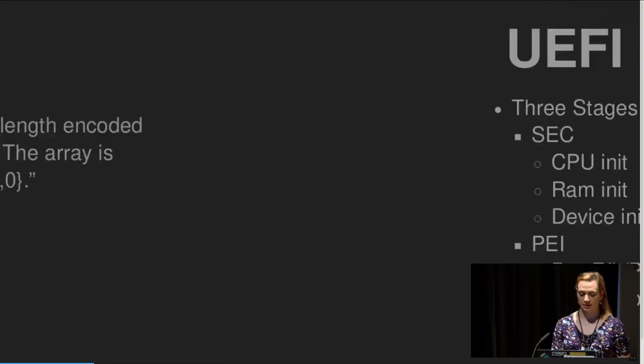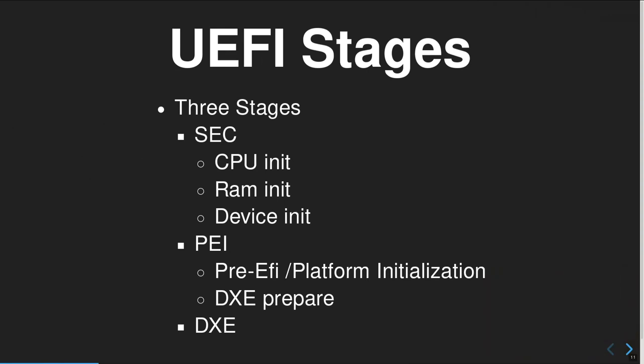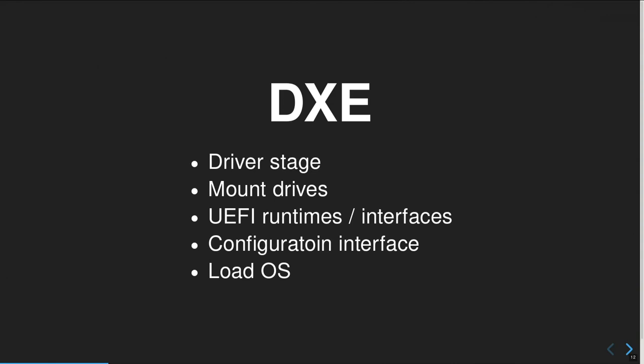When your CPU does this backward jump, it starts in the SEC stage of UEFI, where the remnant CPU and some very basic devices are initialized. From there it continues in the PEI stage, where the pre-EFI platform initialization takes place. Then it prepares for the DXE phase — the driver stage — which mounts drives, sets up UEFI runtimes and interfaces for communicating with the operating system later on, does interface configuration like determining where to boot from, and then loads your operating system.